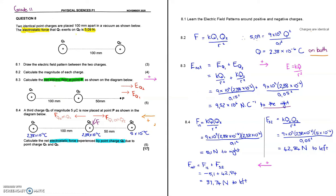In 8.3, calculate the net electric field at point P. Note that in 8.2 we used the electrostatic force, but now we're working with a net electric field. Point P is to the right of Q2, and we know these are two positive charges. Remember, field lines go away from positive charges. So at point P, the electric field due to Q1 will be to the right, and the field lines also go away from Q2 at point P. The field at P due to Q2 will be larger, so I drew that arrow longer.